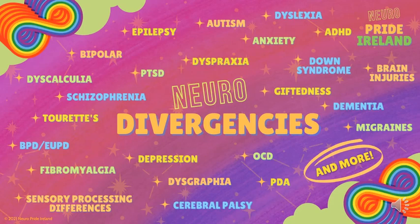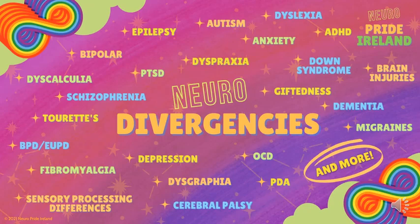This infographic from NeuroPride shows numerous different types of neurodivergencies, including autism, pathological demand avoidance (PDA), anxiety and ADHD. There are also many more not included here. Learning about neurodiversity can have benefits for neurodivergent individuals, including increasing their confidence and ability to self-advocate. Teaching about neurodiversity can help to reduce the stigma surrounding learning and thinking differences.